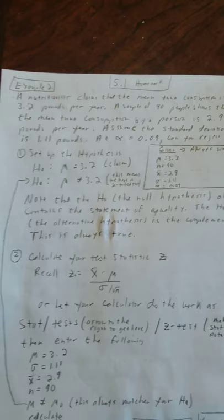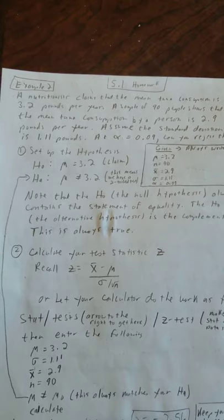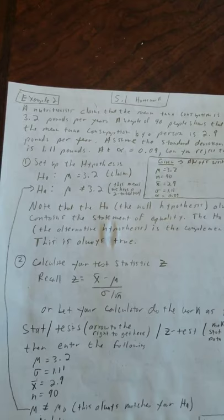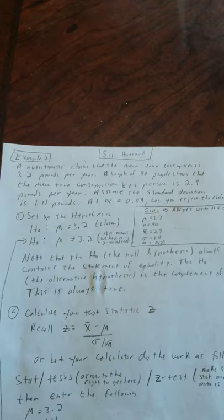An example two: A nutritionist claims that the mean tuna consumption is 3.2 pounds per year. A sample of 90 people shows that the mean tuna consumption by a person is 2.9 pounds per year. Assume the standard deviation is 1.11. At alpha equals 0.09, can we reject this claim?